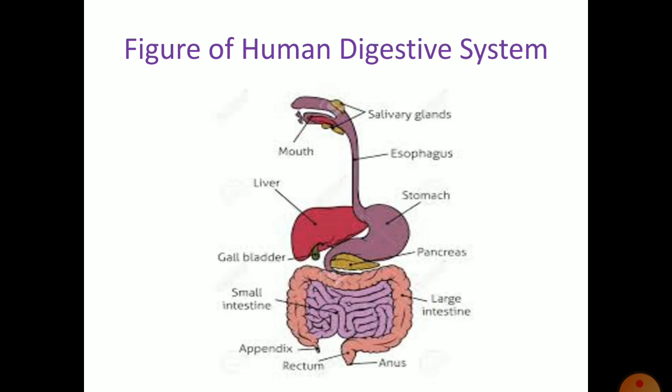This is the figure of the human digestive system that has been labeled really well. The human alimentary canal starts from the mouth, also known as the buccal cavity. In the mouth, the food is chewed with the help of teeth and tongue.